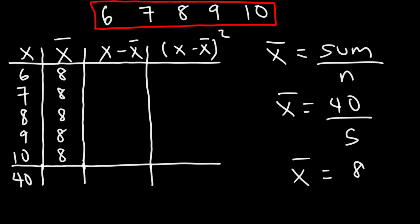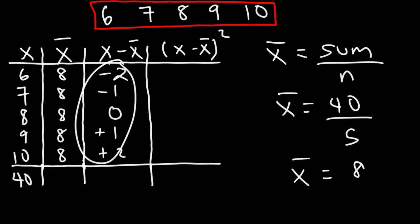Now let's calculate the deviations — that's x minus x-bar. So here it's 6 minus 8, which is negative 2; 7 minus 8, which is negative 1; 8 minus 8 is 0; 9 minus 8 is positive 1; and 10 minus 8 is positive 2. If we add up the deviations — negative 2, negative 1, 0, 1, and 2 — they add up to 0.